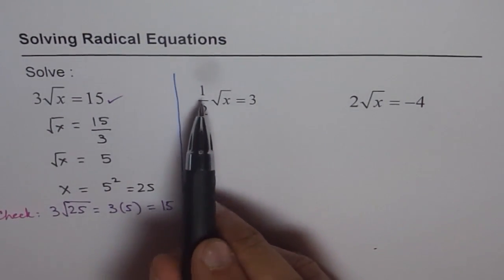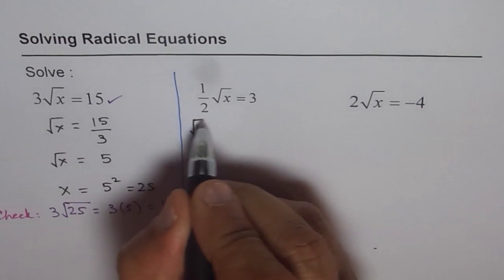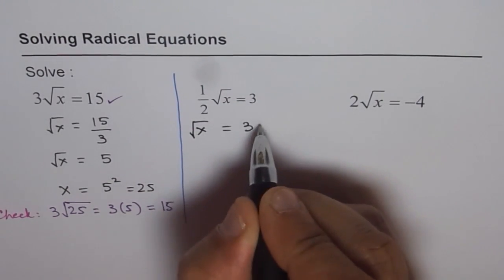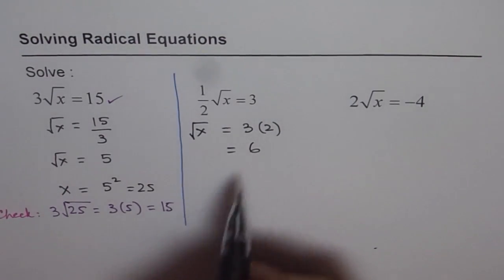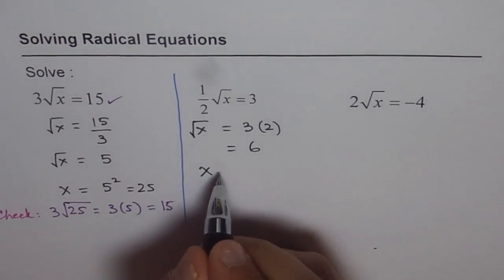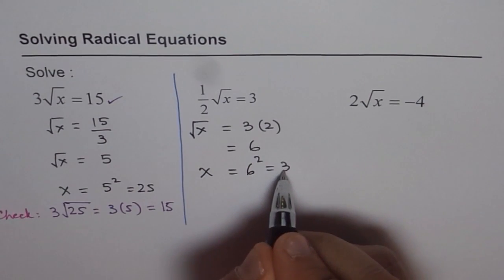What we will do is multiply by 2 on both sides. So we get √x = 3 times 2, which is 6. And now we can square both sides. Squaring both sides will give us x = 6², that is 36.